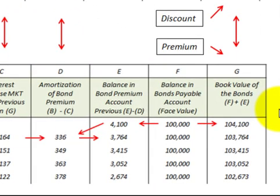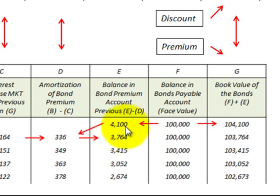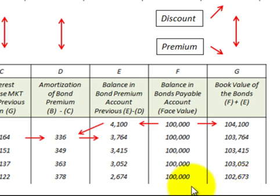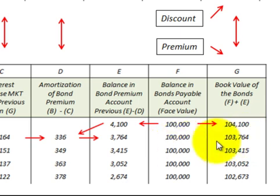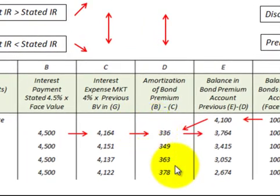Now let's look at how we amortize a bond purchased at a premium. Here we purchased the bond for $104,100 with a face value of $100,000, so we use a bond premium account — the difference is $4,100. Adding the $4,100 to the face amount gives us the book value. We have to decrease this book value from $104,100 down to $100,000, so at maturity the book value equals the face amount. We decrease the bond premium account each period because adding the bond premium to bonds payable gives us the book value.